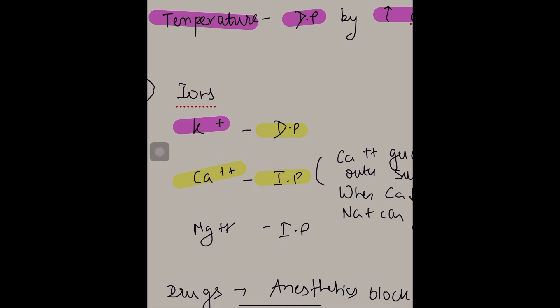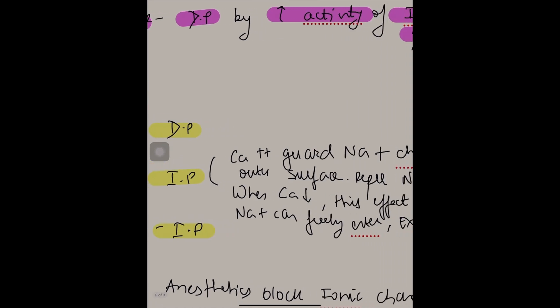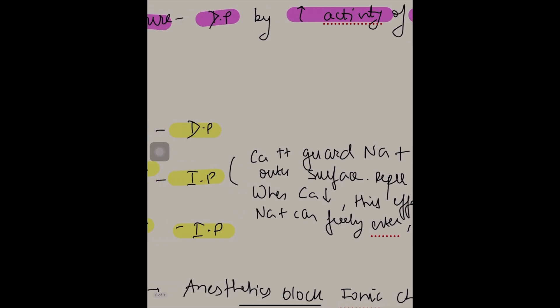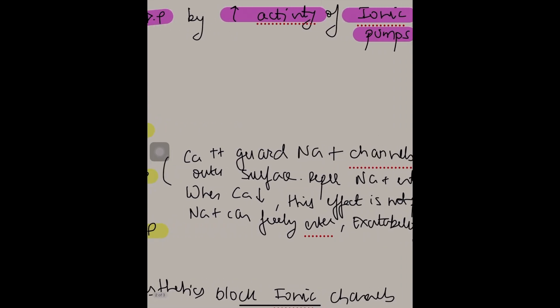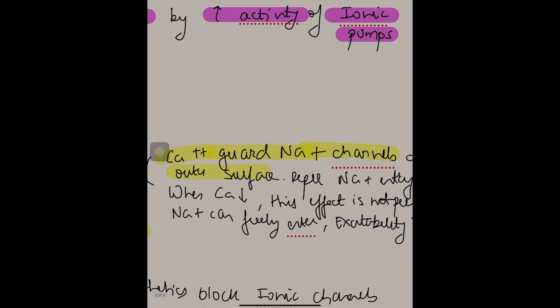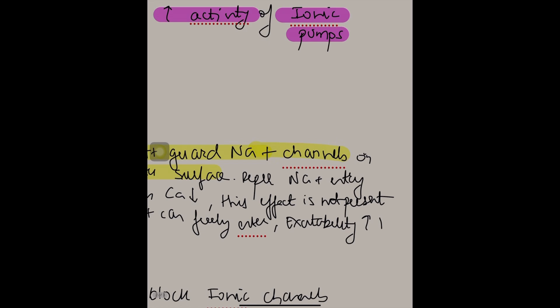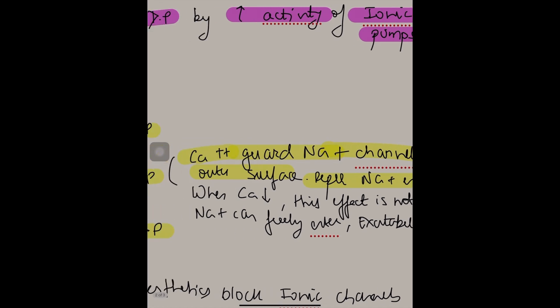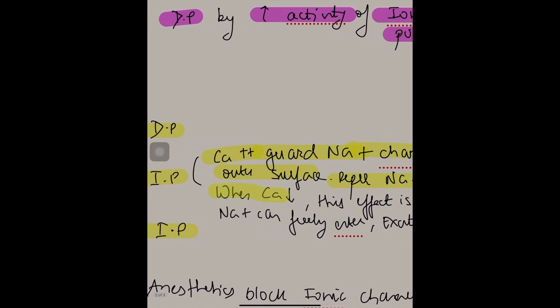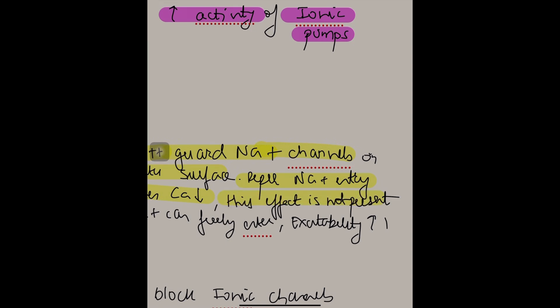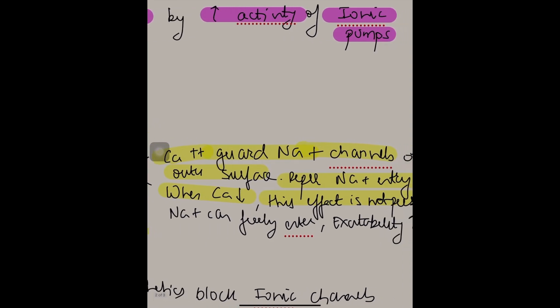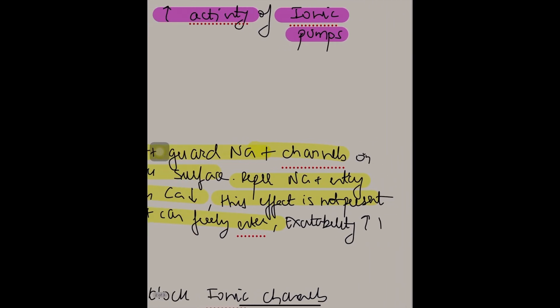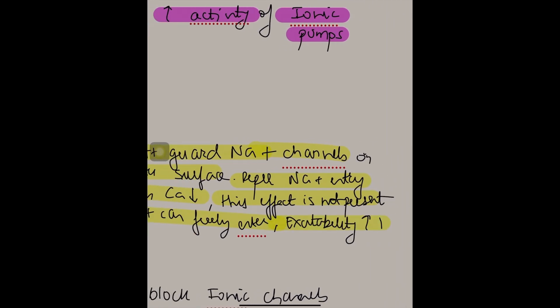Calcium is inversely proportional, magnesium is inversely proportional. Why is calcium inversely proportional? The calcium ions guard the sodium channels on the outer surface of the cell membrane. When you say guard, it means they repel sodium entry. When there is calcium, sodium cannot enter the cell. When calcium decreases, this effect is no more present. Sodium can enter freely inside the cell and excitability increases.